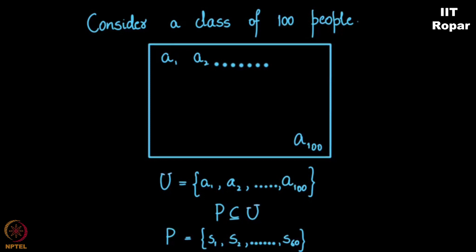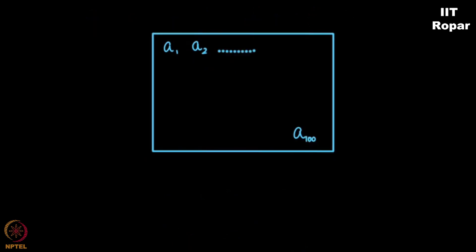As you can see in this Venn diagram, you can put a circle and put all these S1, S2 and so on up to S60. And what do you observe? You observe that there are 40 people outside this circle.